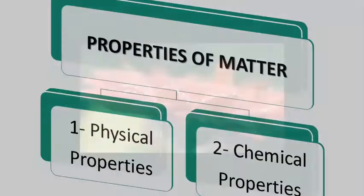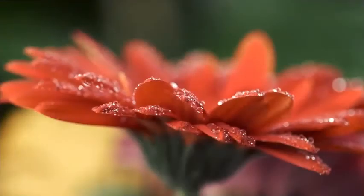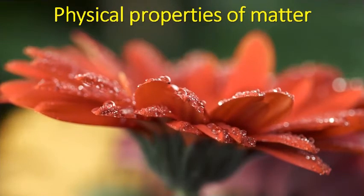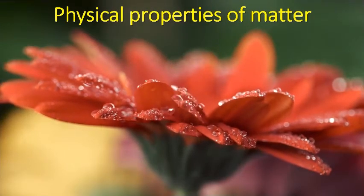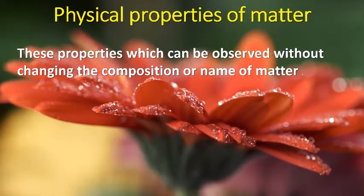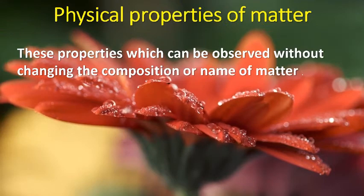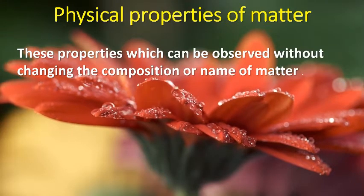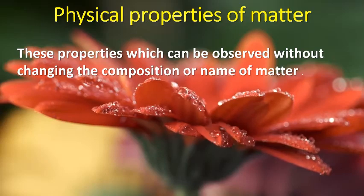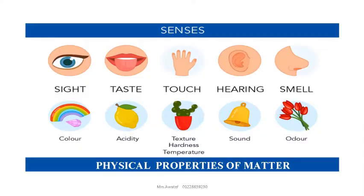What is the meaning of physical properties of matter? It means these are the properties which can be observed without changing the composition or chemical nature of matter. How can we know the physical properties of matter? We mainly depend on our sense organs to know some — not all — of these properties.